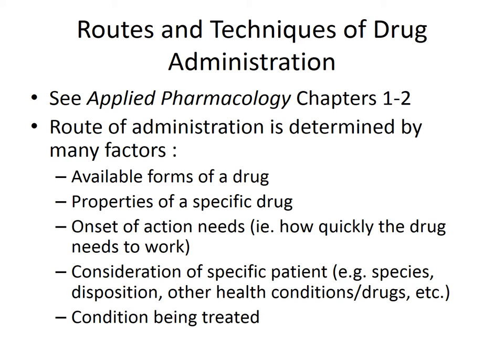The route of administration of any particular drug is determined by several factors. First, and most obviously, the available forms of a drug — if we'd like to give a drug orally but no oral form exists, that's not the way we can give it. We also need to look at the properties of a specific drug, such as bioavailability. If a drug is only 10% bioavailable by mouth, we're likely going to give it by injection. We also need to figure out on a case-by-case basis how quickly we need the drug to work — a quick onset of action means we lean toward an injectable form, whereas if we have time, oral might work fine.